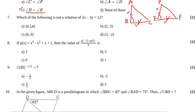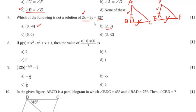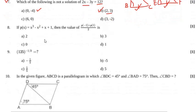Question number 7: Which of the following is not a solution of 2x - 3y = 12? We put values of x and y into the equation. When x = 0, y = -4: 0 - 3(-4) = 12, which satisfies the equation. When x = 2, y = 3: 2(2) - 3(3) = 4 - 9 = -5 ≠ 12, so this is not a solution. The correct option of question number 7 will be B.